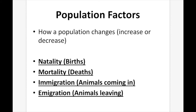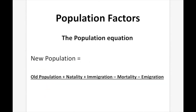Population factors: how a population changes, increases, or decreases. There are four main factors — natality (births), mortality (deaths), immigration (animals coming in), and emigration (animals leaving). This brings us to our population equation: the new population equals the old population, plus births, plus immigration, minus deaths, minus emigration. That gives us our new population.